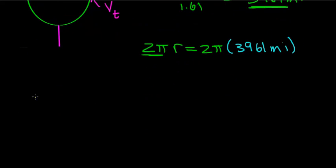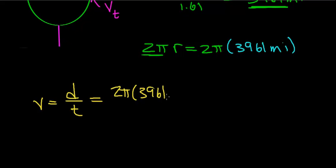The Earth rotates at constant velocity, so the tangential velocity equals the distance traveled divided by the time. The distance is 2π times the radius, which is 3,961 miles, and it takes 24 hours to make one rotation.